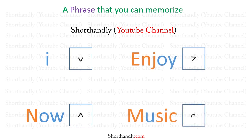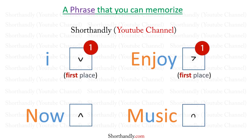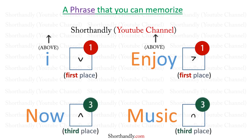Now we are going to see the places and outline positions for all 4 diphthongs. The diphthongs 'i' and 'oi' are placed on the first place, and their outlines are made above the line. The diphthongs 'ao' and 'u' are placed on the third place, and their outlines are made through the line.